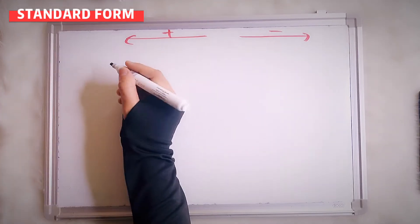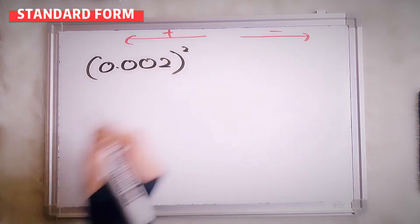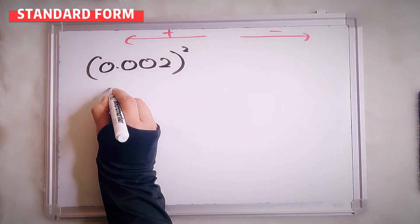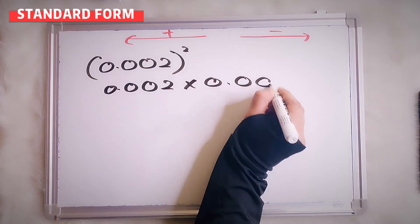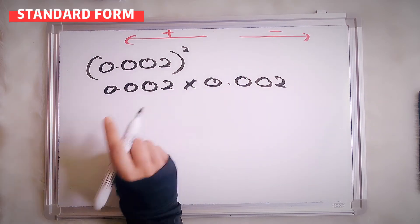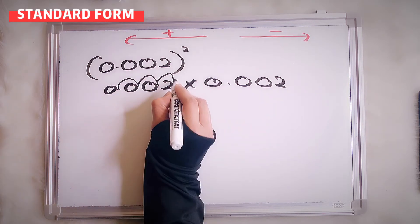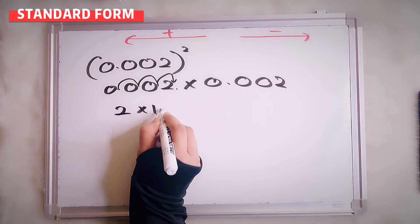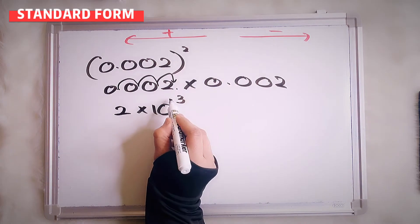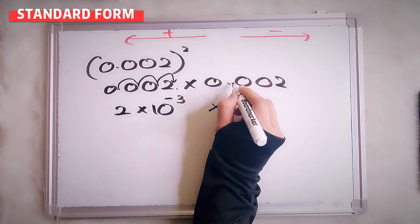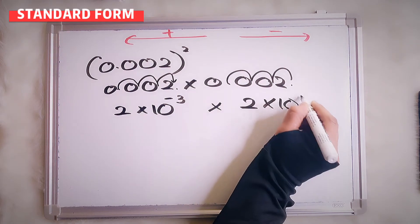Next: 0.002 squared. Open the bracket — that means 0.002 multiplied by 0.002. Change this one first: count 1, 2, 3. That means it's 2 times 10 to the power of negative 3, since we move to the right side. Same for the second: 2 times 10 to the power of negative 3.